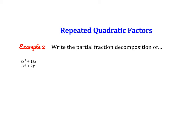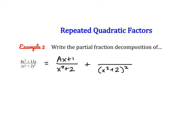Now we're going to put together what we know about quadratic factors and repeated factors to try a more complex problem. The denominator is already factored. Remember, although it might look like an improper fraction, the degree of the denominator is actually 4, so this is not improper. We're going to have a term for x squared plus 2 and a term for x squared plus 2 squared — that's how we treat repeated factors. Since both are quadratic factors, the numerators are ax plus b and cx plus d. We use a fusion of both rules.